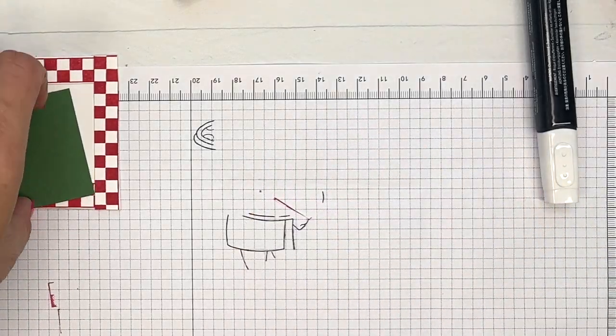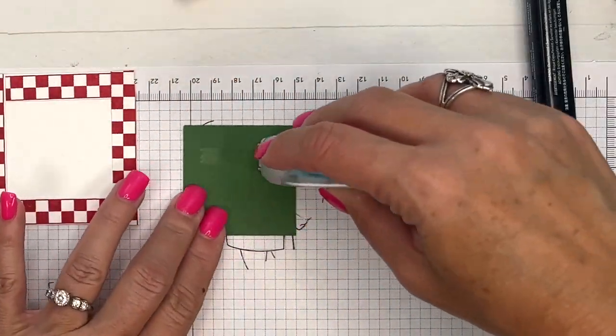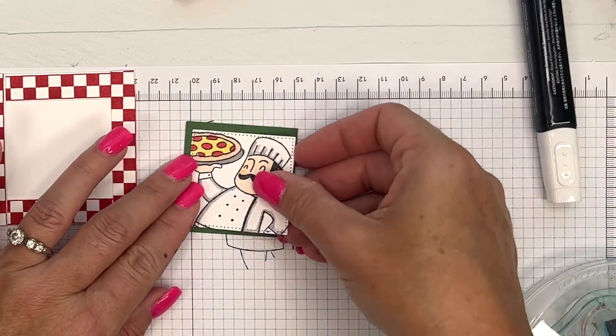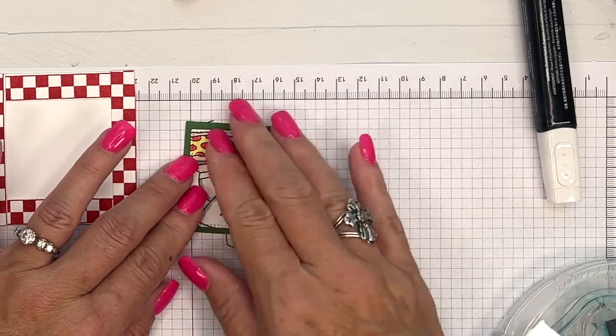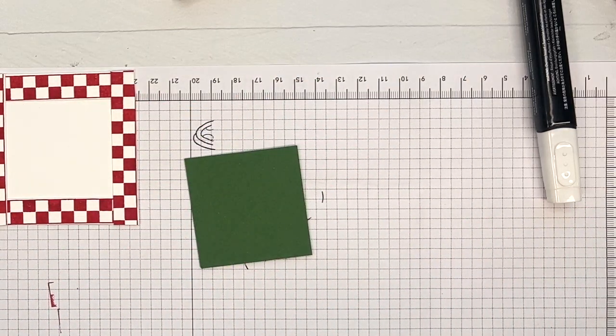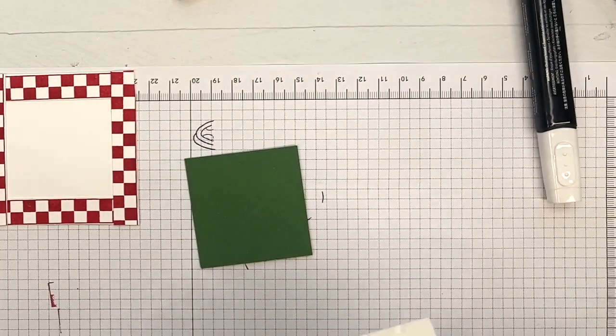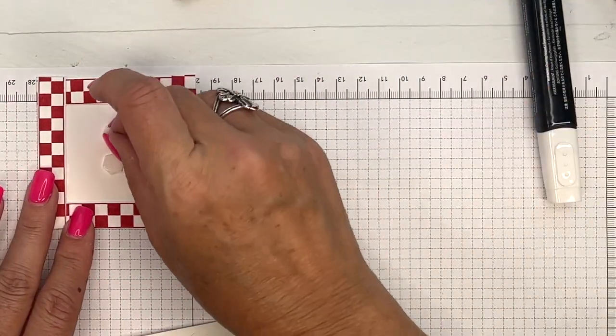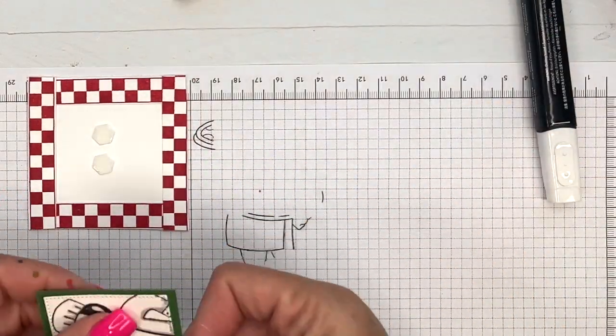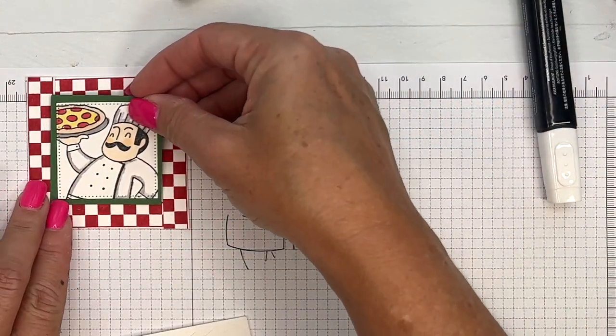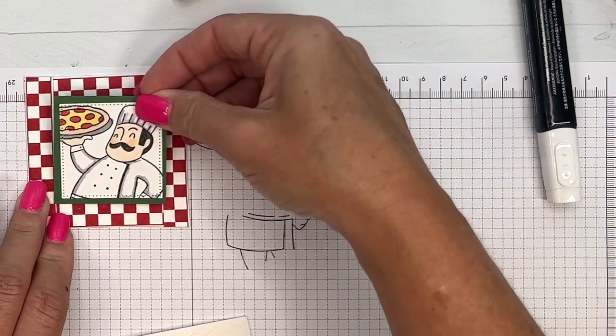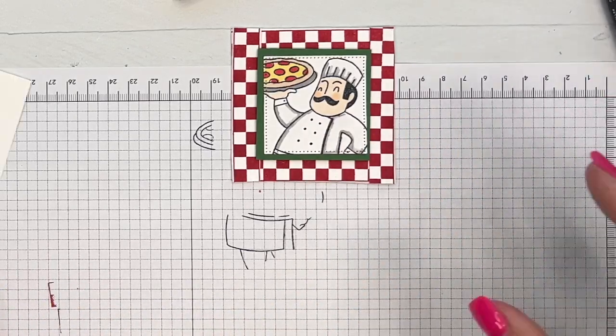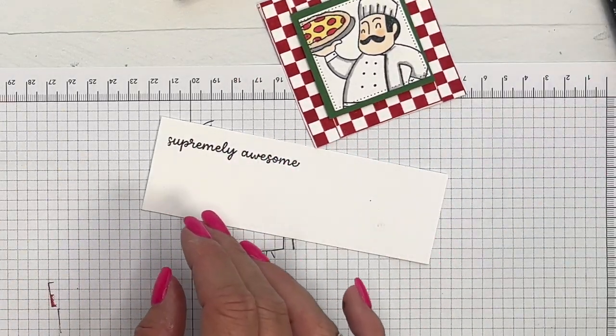Okay, now let's mat it on a piece of garden green, like that. And dimensionals, we're going to put this onto our little background that we created. There we go.